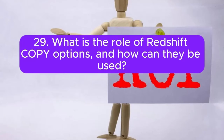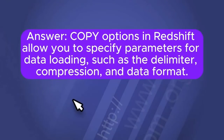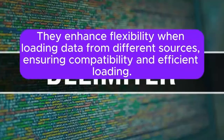Question 29: What is the role of Redshift COPY options, and how can they be used? Answer: COPY options in Redshift allow you to specify parameters for data loading, such as the delimiter, compression, and data format. They enhance flexibility when loading data from different sources, ensuring compatibility and efficient loading.